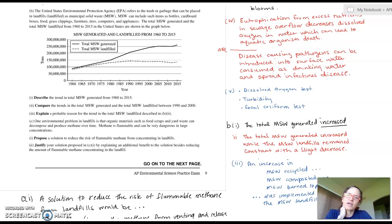Number two: compare the trends in the total municipal solid waste generated and the total municipal solid waste landfill between 1990 and 2000. We're going to go to that 1990 to 2000 range right here. You're going to see that the total municipal solid waste generated increased while the municipal solid waste landfill remained constant, maybe even with a slight decrease.